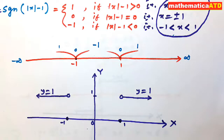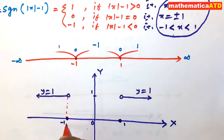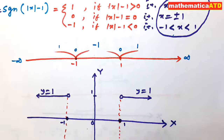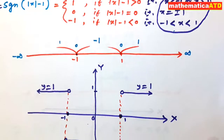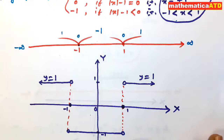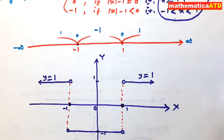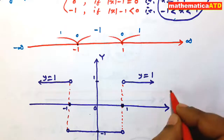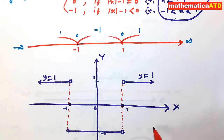So ultimately we have got the domain, range, and graph of the function sgn(|x|-1). Please go through this video again and again — I think you have understood all the facts. Thank you, have a nice day.